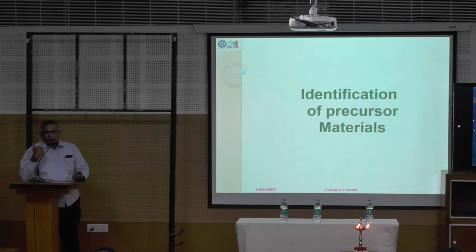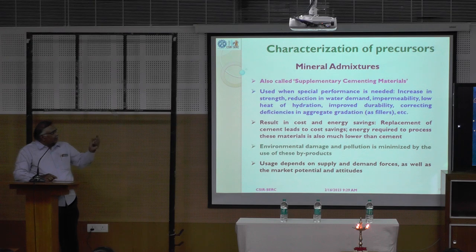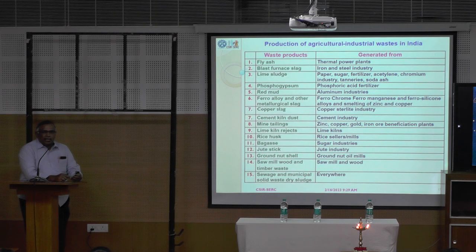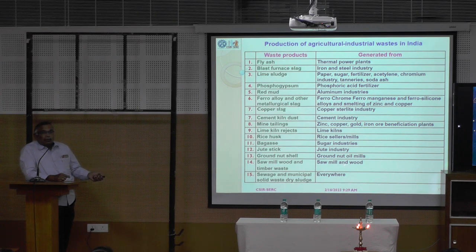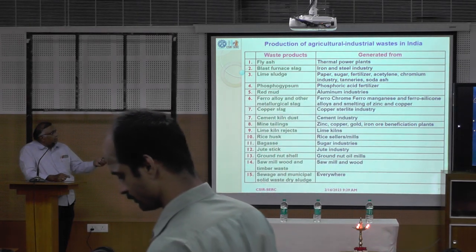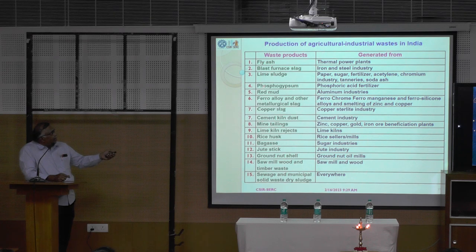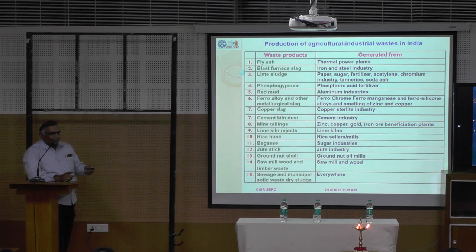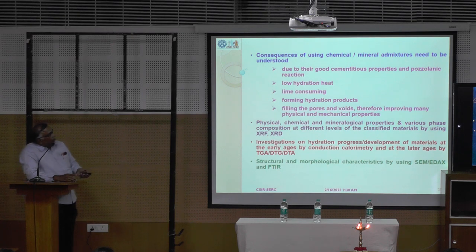So these precursor materials — if you want to think of supplementary materials, these are all otherwise called mineral admixtures. From this list, I am interested mostly in three materials: lime sludge, slag, and fly ash. This is due to their good cementitious properties and pozzolanic reaction, low heat of hydration, and lime-consuming nature. Otherwise you can go through Shetty's book.